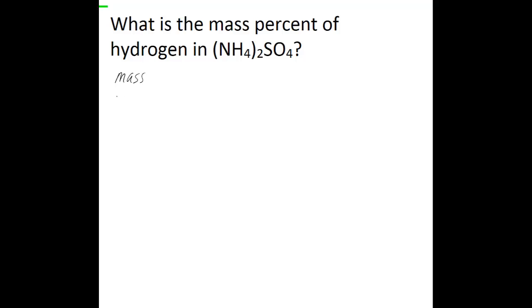So mass percent, when you actually try to calculate it, is going to be equal to the mass of the element of interest that you want to know—the percentage of the total mass of a compound that comes from that specific element. So you're going to divide that by the total mass of the compound.